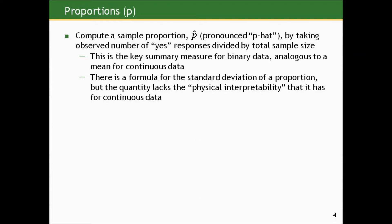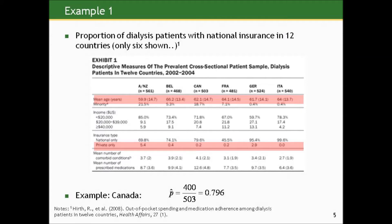Let's look at an example. Here are results from a study showing the proportion of dialysis patients with national insurance across 12 countries. For brevity, I'm showing a table that only charts six of those countries. For example, in Canada, there were 503 Canadians and 400 of them had national health insurance. So our estimated proportion is 400 divided by 503, or .796 — roughly 80%.